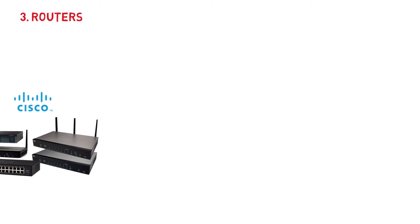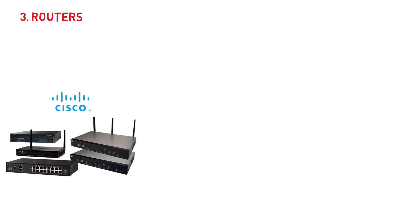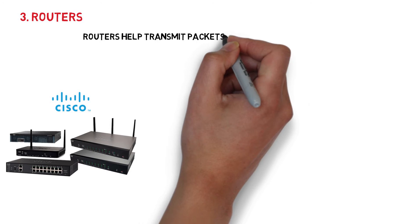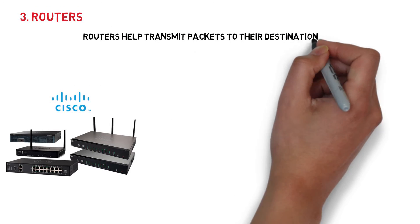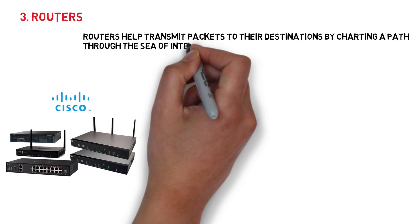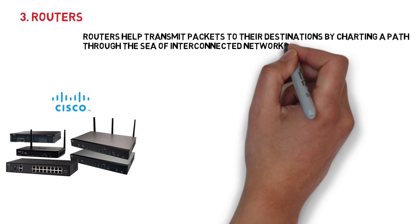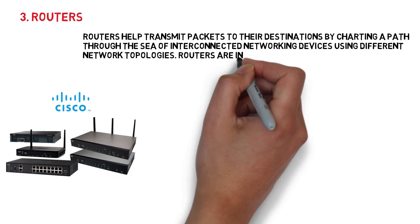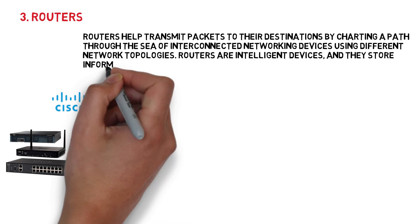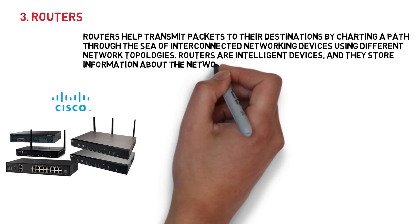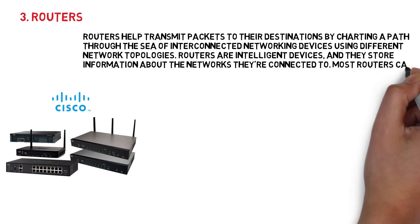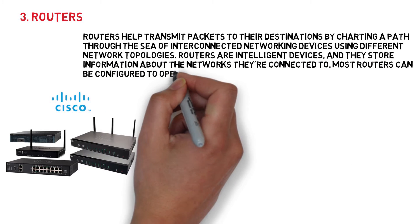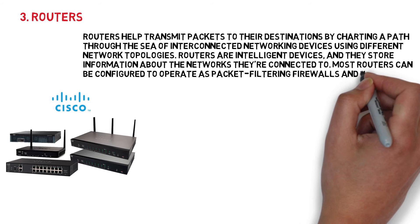3. Router. Routers help transmit packets to their destinations by charting a path through the sea of interconnected networking devices using different network topologies. Routers are intelligent devices, and they store information about the networks they're connected to. Most routers can be configured to operate as packet filtering firewalls and use access control lists (ACLs).